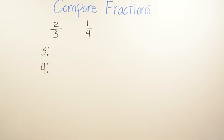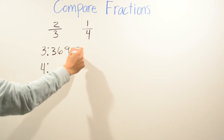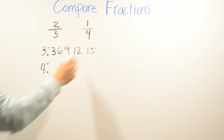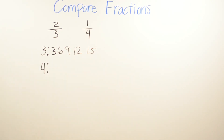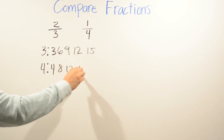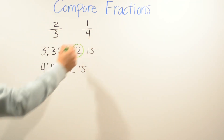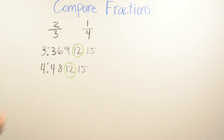In this example we're comparing two thirds and one fourth. We'll do the same thing as before — find the LCM of the denominators. Starting with three: three, six, nine, twelve, fifteen. Starting with four: four, eight, twelve. I can see that twelve appears in both lists, so twelve is the LCM.